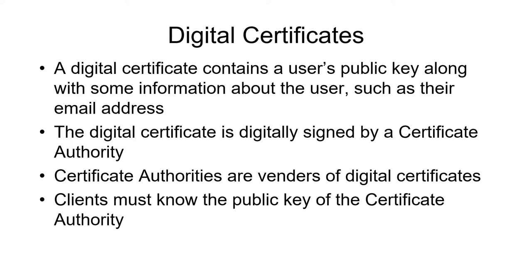The other method is digital certificates, which are the most common. Digital certificates contain the user's public key along with information about the user — typically their email address, name, and organization. The digital certificate is then digitally signed by a certificate authority. Certificate authorities are vendors or organizations that generally sell digital certificates. Your email client must know the public key of the certificate authority. In Microsoft Windows, if you look at your browser, you can usually see the cache of all the digital certificates and certificate authorities that your email system knows.